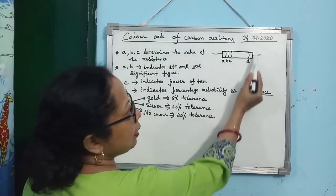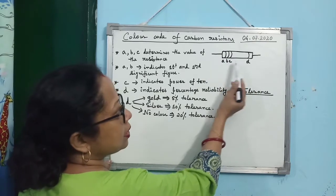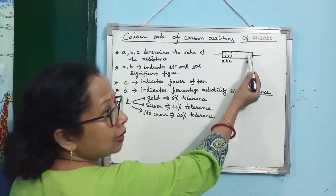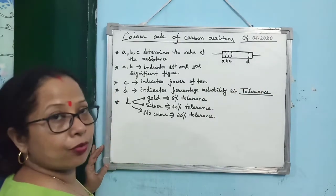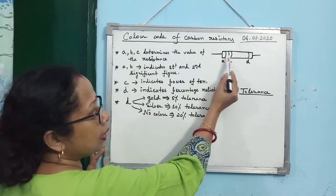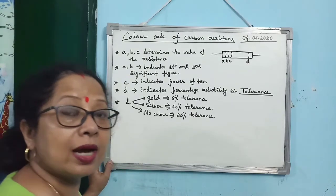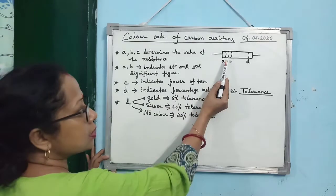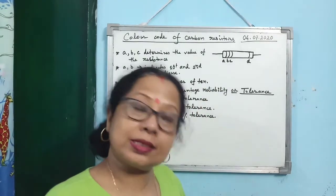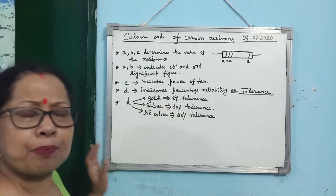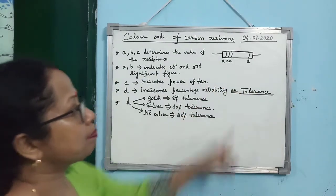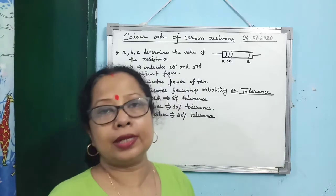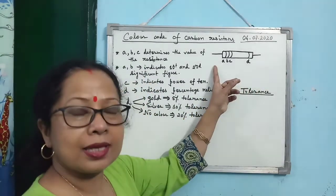On a typical carbon resistor, on the left side there are three colored rings named A, B, C, and at the right end there is one single colored ring named D. Rings A and B indicate the first and second significant figures of the resistance. Ring C gives the power of 10. Ring D indicates the percentage reliability or tolerance — how much error may be present in the given value of resistance.